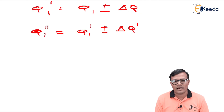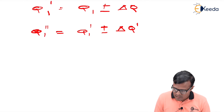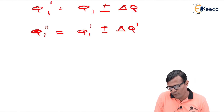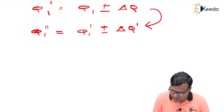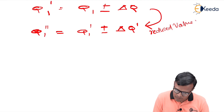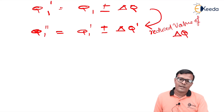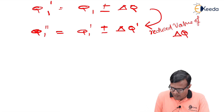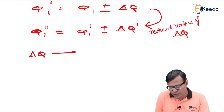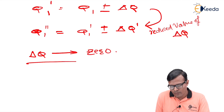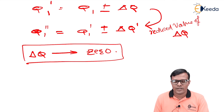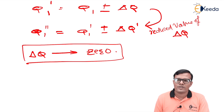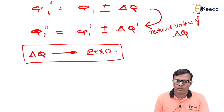Initially the error — the difference between actual and assumed values — is very large, but after the first iteration it gets reduced, becoming delta-q'. After subsequent iterations the value of delta-q approaches zero. Generally in problems, by the third iteration the delta-q value reaches 0.002 or 0.003, which is negligible and considered zero. We solve the problem until delta-q becomes zero. That is all.